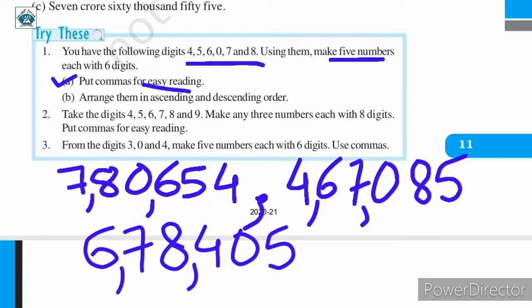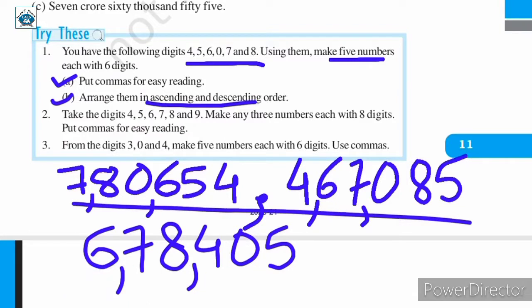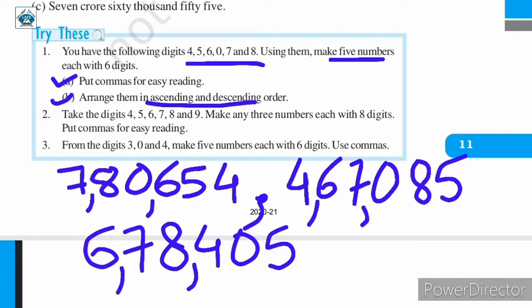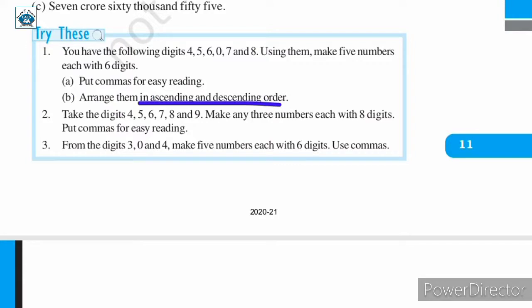So now you understand how to put commas for easy reading. I have made three numbers here; you need to make five numbers total. So you need to make two more six-digit numbers and arrange all five in ascending order and descending order. We have already discussed how to arrange numbers in ascending and descending order, so try this on your own and write the solution in your notebook.